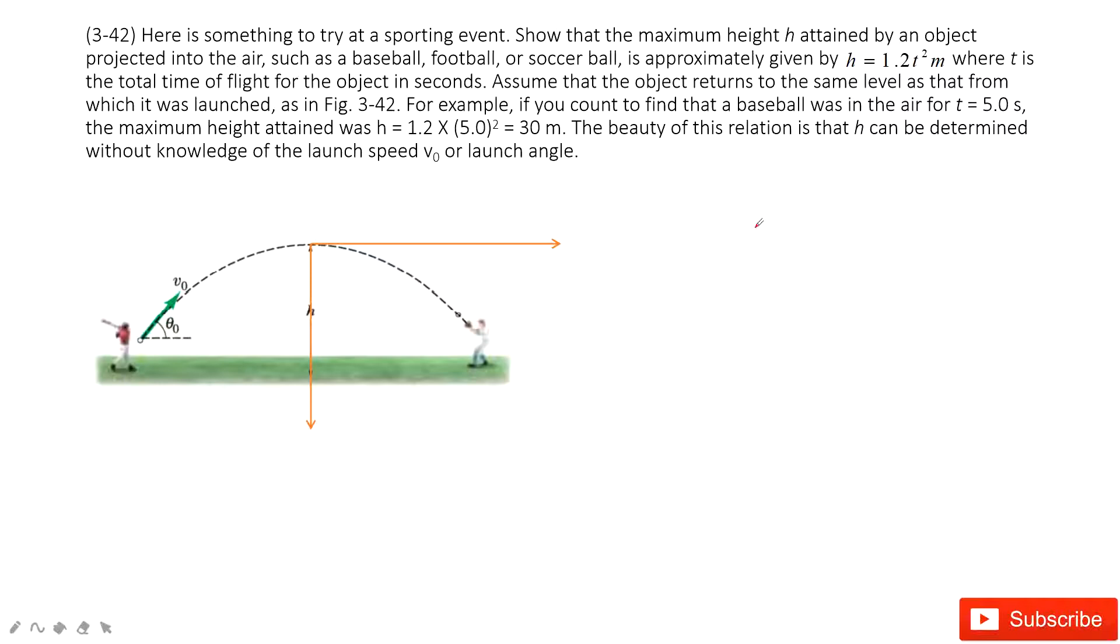Let's talk about problem 42 at chapter 3. In this one, we will still talk about projectile motion. It asks us to prove the equation h equals 1.2t squared. Here h is the maximum height this projectile motion can reach, and t is the time taken. You can see in this equation, we don't have initial velocity and also the angle theta. Now let's see how we prove it.